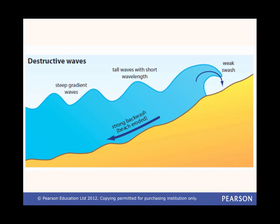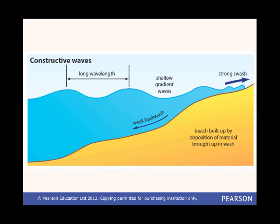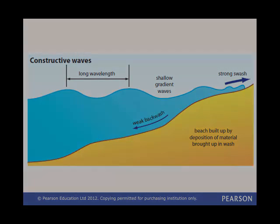Wave action is the most important marine process. There are two main kinds of waves. Destructive waves break on the coast with a lot of power and have a very strong backwash, which means they drag material away from the coast, eroding it. Constructive waves are much weaker and have a stronger swash than backwash, meaning they tend to build up material on the coast by deposition.